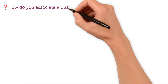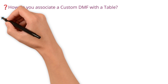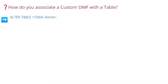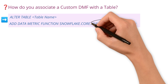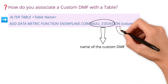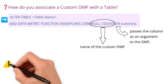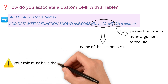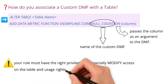How do you associate a custom DMF with a table? To associate a custom DMF with a table in Snowflake, you use the ALTER TABLE command with the ADD DATA METRIC clause. This tells Snowflake to apply your custom DMF to that table. NULLCOUNT is the name of the custom DMF you have already created, and the ON column passes the column as an argument to the DMF. Your role must have the right privileges — specifically modify access on the table and usage rights on the DMF.